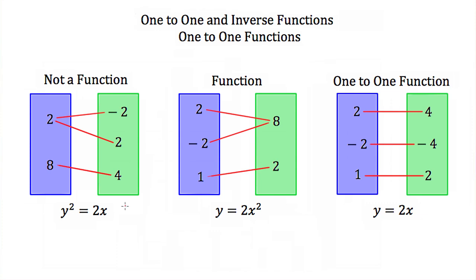Let's look at an example. Here we have something that's not a function: y² = 2x. This is not a function because if we plug in 2 for x and solve for y, we get solutions of either negative 2 or positive 2. Since this one x value has two different y values associated with it, it is not a function.